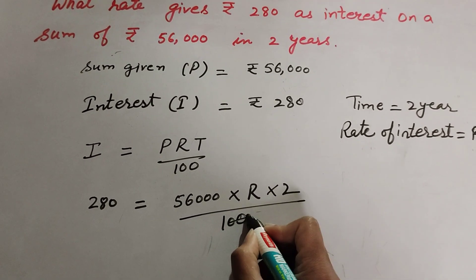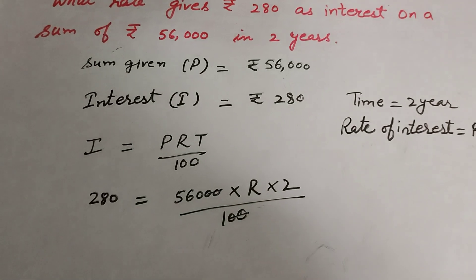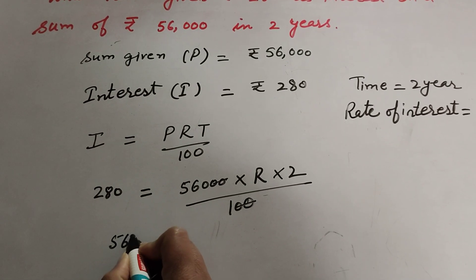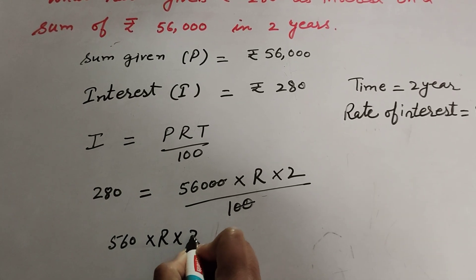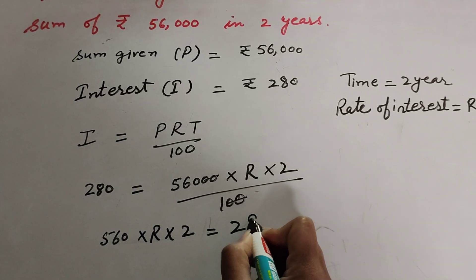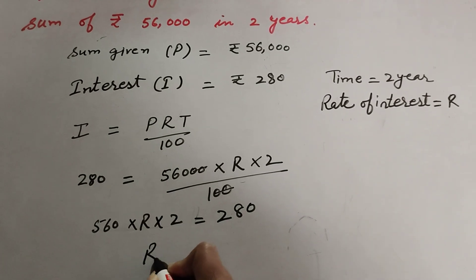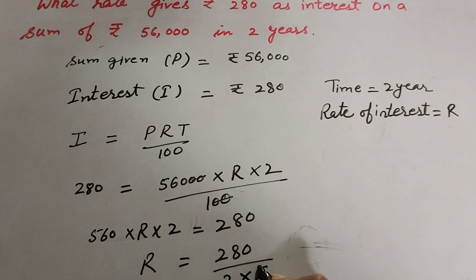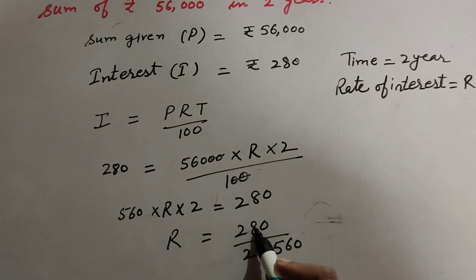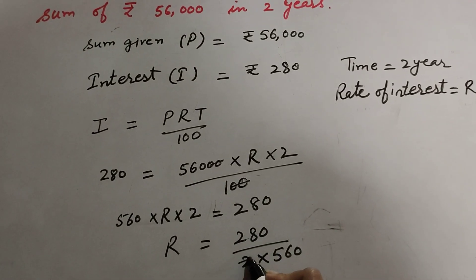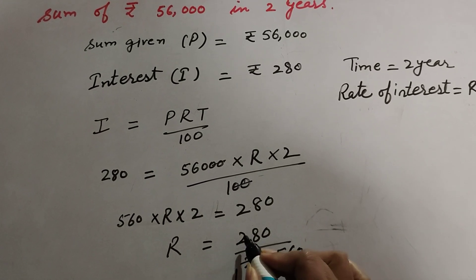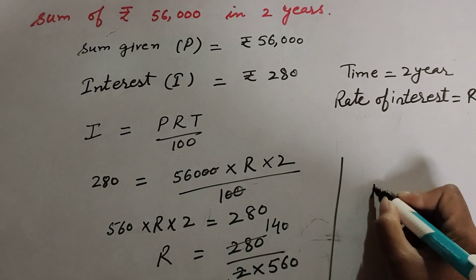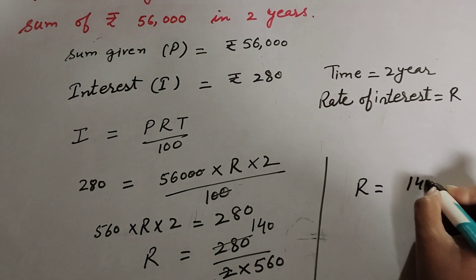The two zeros in the denominator and numerator cancel, giving 560 × R × 2 = 280. So R = 280 over (2 × 560), which simplifies to R = 140 over 560.